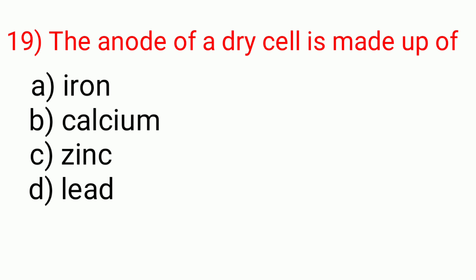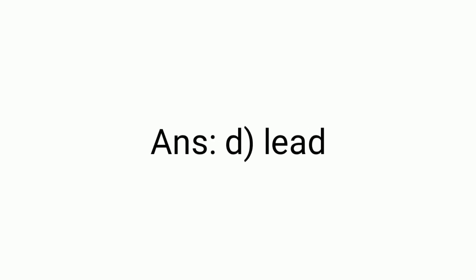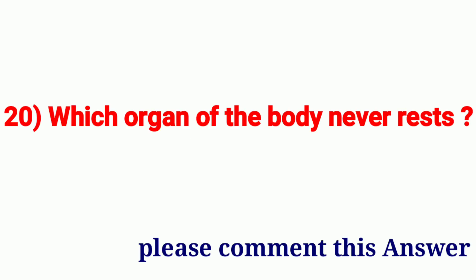Question number nineteen: The anode of the dry cell is made up of a) iron, b) calcium, c) zinc, d) lead. Answer is D, lead. Last question: Which organ of the body never rests? If you know this answer, please comment the answer.